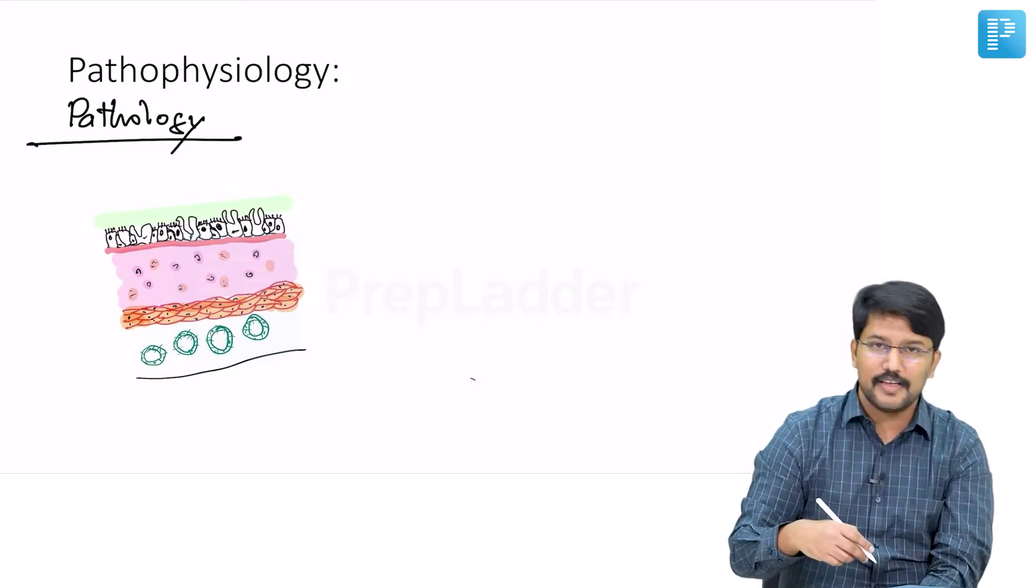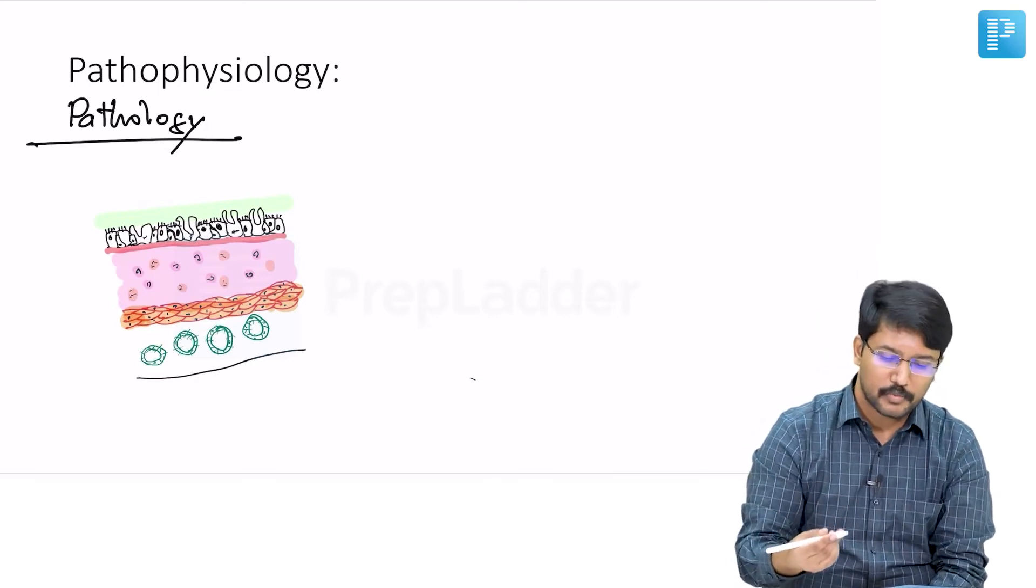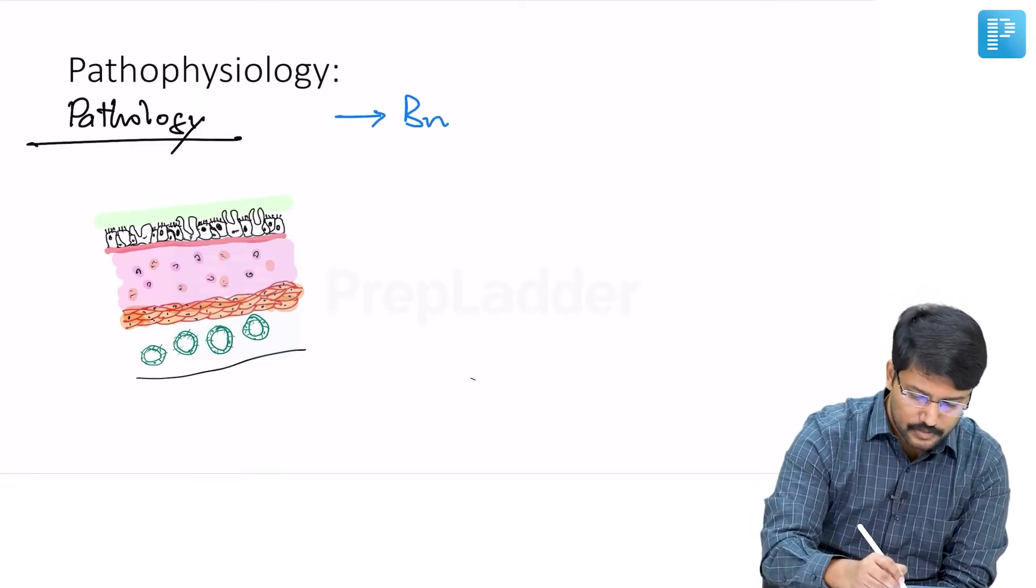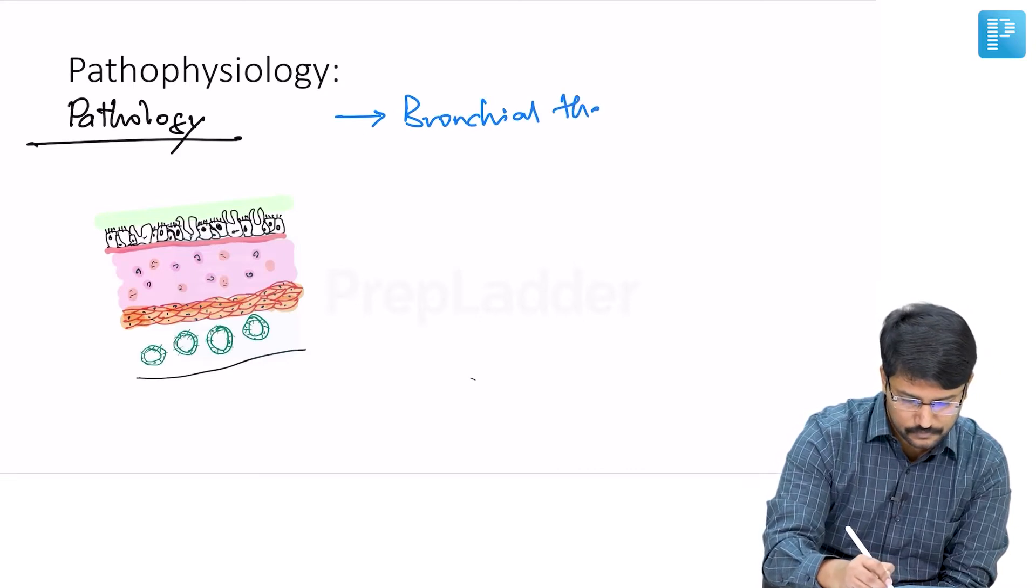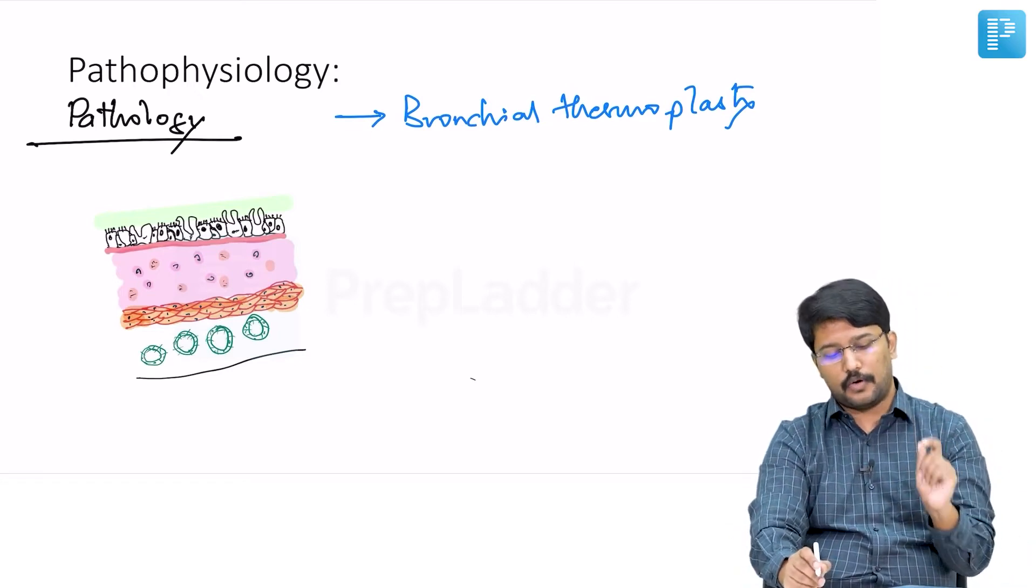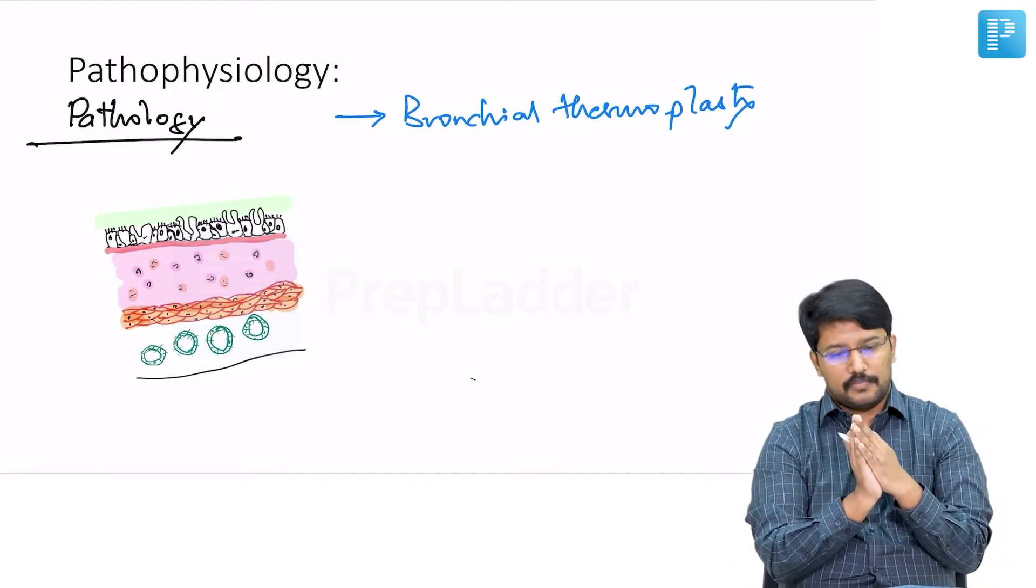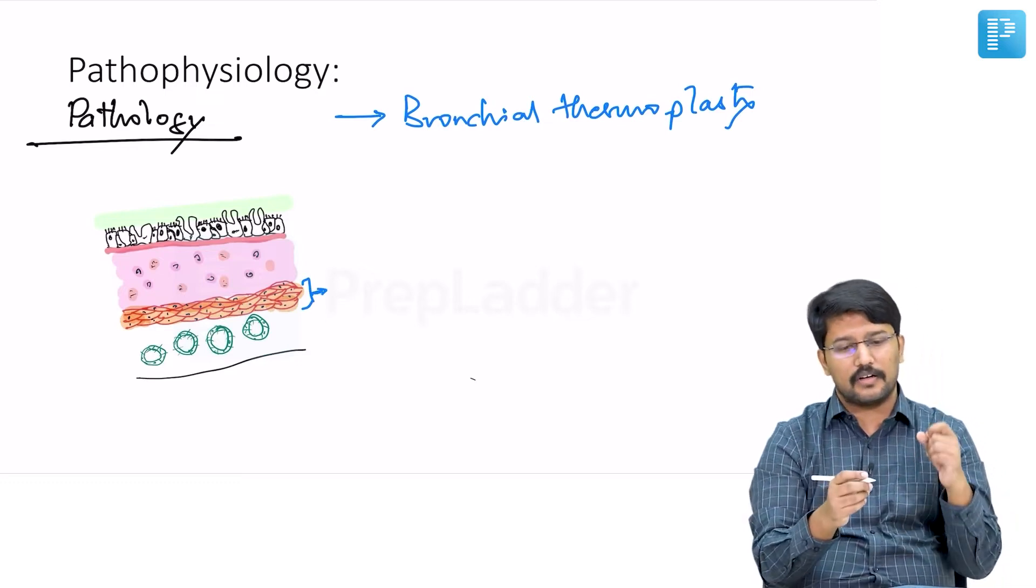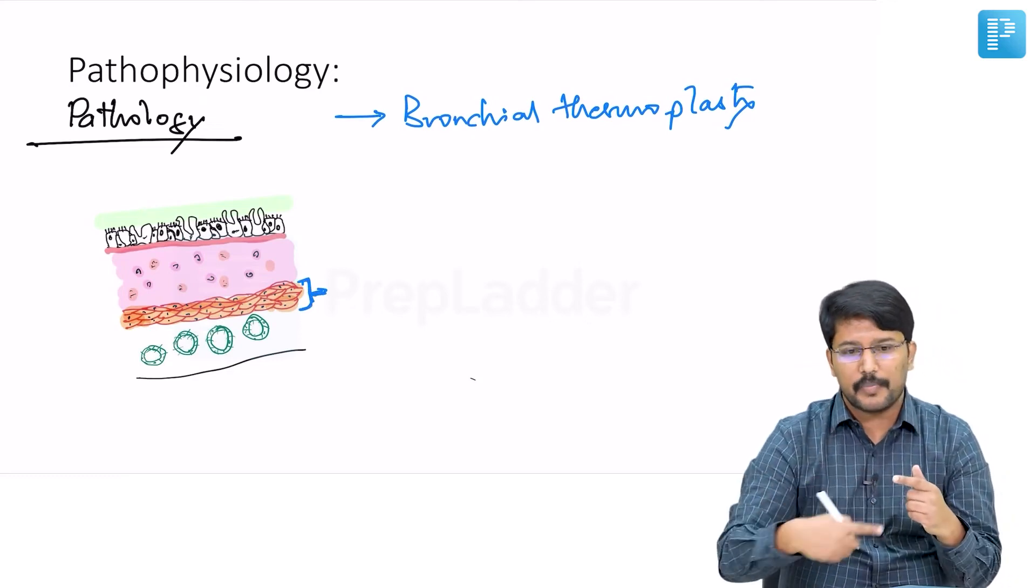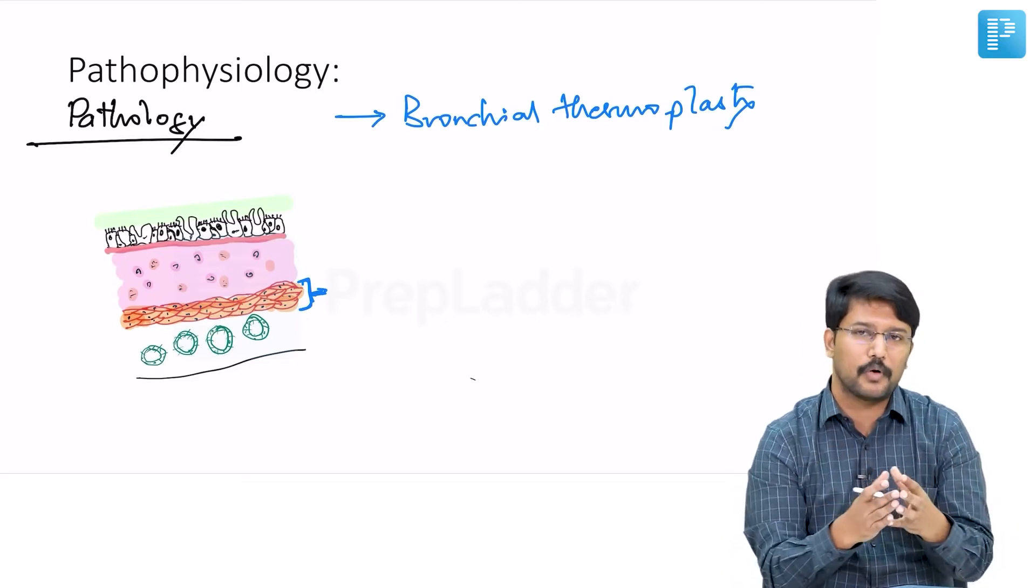Hypertrophy of smooth muscle layer is utilized in a specific treatment modality for bronchial asthma - bronchial thermoplasty. Because of repeated exposure to triggers, there is hypertrophy of the smooth muscle. This is almost akin to sending your bronchial muscles to the gym. This hypertrophic muscle with passage of time mounts a stronger response to allergens.